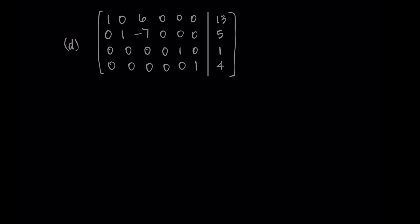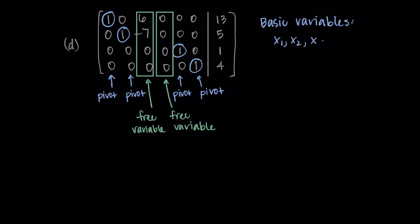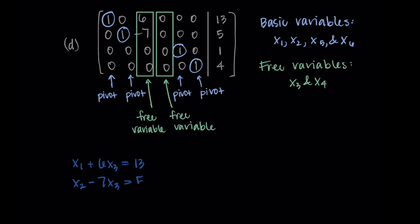For the final example, we have a much larger matrix with six columns and variables x1 through x6. I identify pivots in columns one, two, five, and six. Columns three and four correspond to free variables — note that column three has non-zero values while column four is all zeros. The basic variables are x1, x2, x5, and x6; the free variables are x3 and x4. Reading the equations: x1 plus 6x3 equals 13, x2 minus 7x3 equals 5, x5 equals 1, and x6 equals 4.